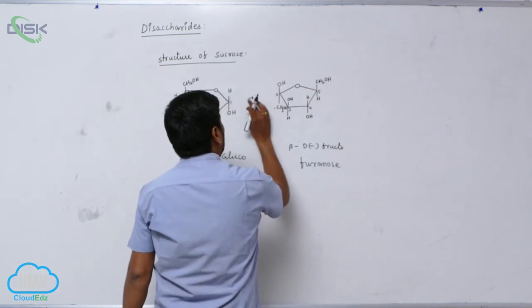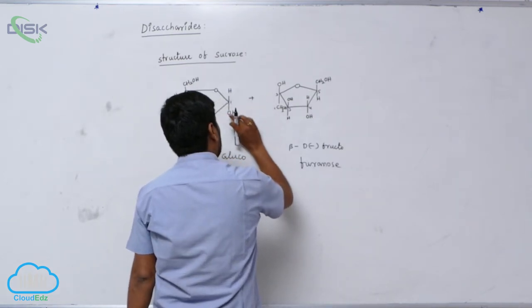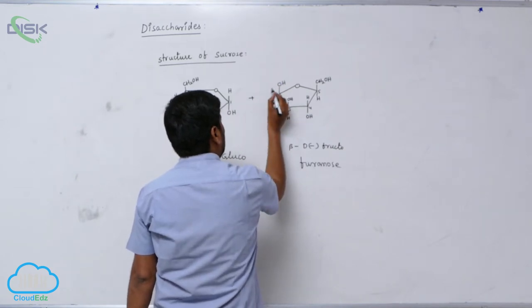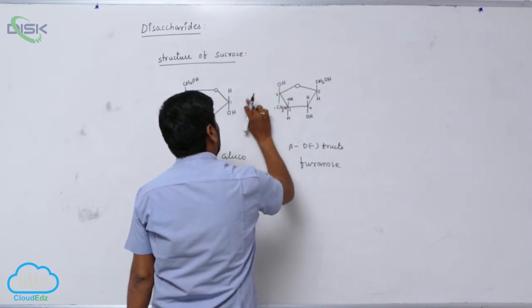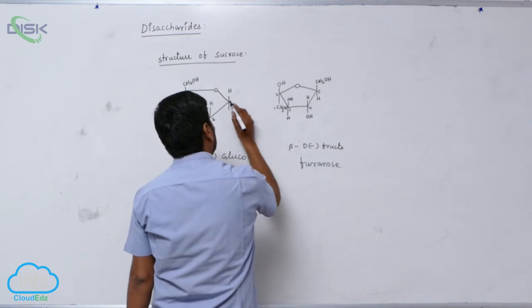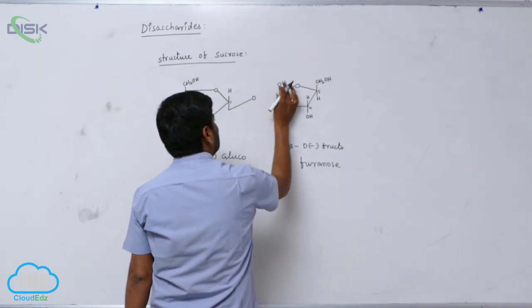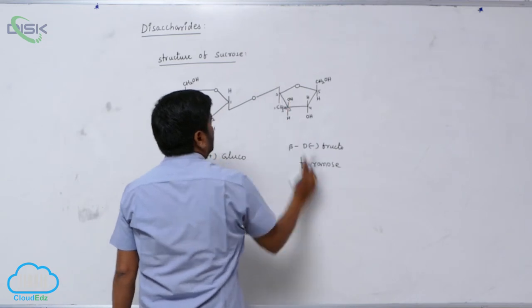Now, these two are involved in glycosidic linkage. Here just loss of water molecule takes place to form a glycosidic linkage. Here oxygen, like this.